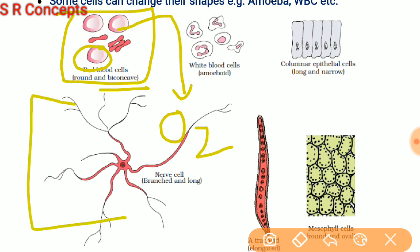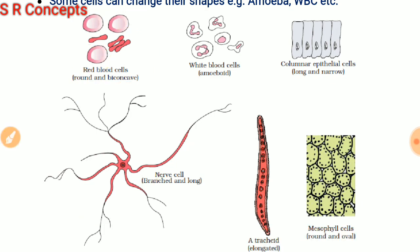Similarly, the nerve cell's function is to carry information in an animal body from one point to another. To carry messages efficiently, its shape is long and thread- or cable-like, with many thread-like structures. In this way, the function, size, and shape of cells are related to each other.